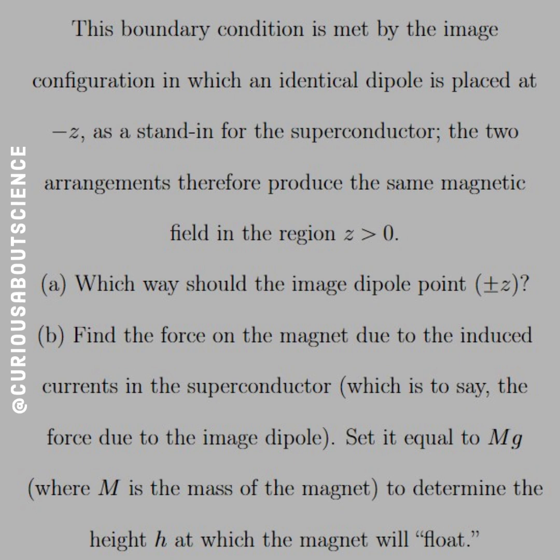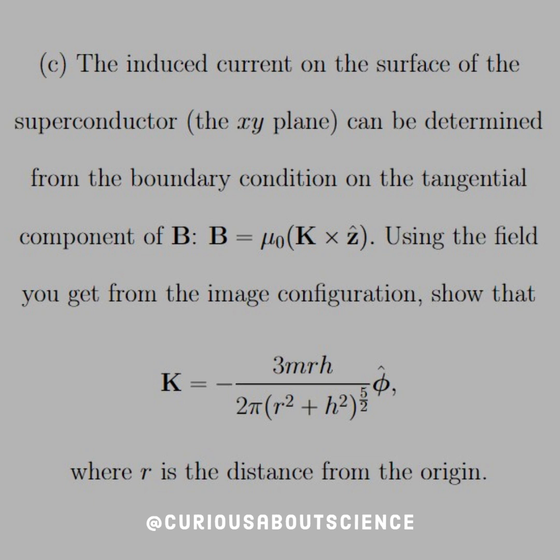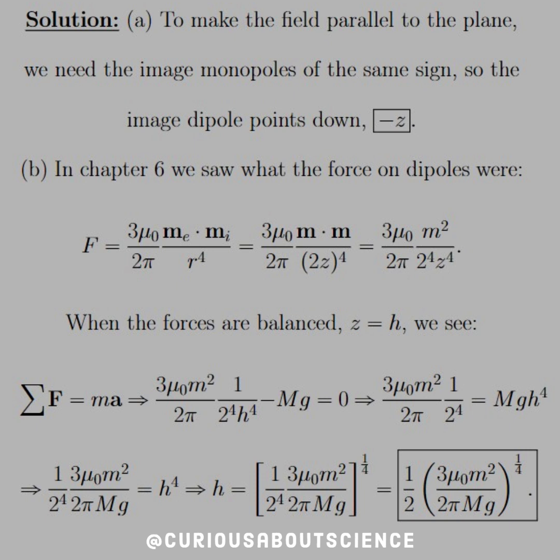And then C, the last part, the induced current on the surface of the superconductor in the xy plane can be determined from the boundary condition of the tangential component of B, not the normal component. So B equals mu naught K cross z hat using the field you get from the image configuration. Show that K equals negative 3MRH over 2pi times R squared plus H squared to the five halves power in the phi hat direction where R is the distance from the origin.